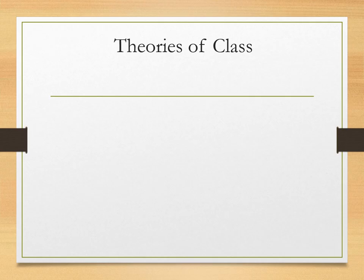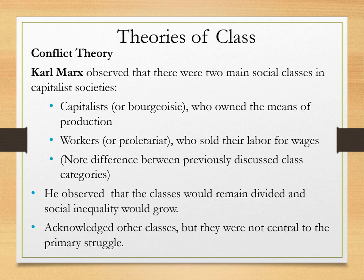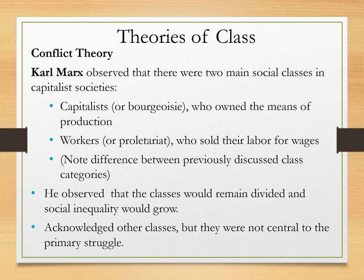Conflict theory has a lot to say about social class — it's really what it's all about. Marx observed that there are two primary classes in capitalist societies: the capitalist or bourgeoisie class and the worker or proletariat class. What separates them is that the capitalist owns the means of production — the wealth that makes things. Workers sell their labor for wages because they do not own the factories, grocery stores, or farmland. Marx also acknowledged that classes would remain divided, that social inequality would grow, and that while other classes exist, they are not as central to the primary struggle.